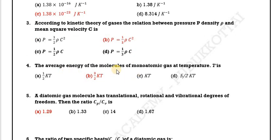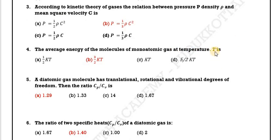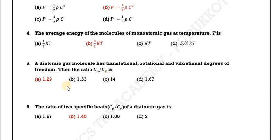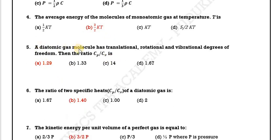Question 5: The average energy of the molecules of a monoatomic gas at temperature T. A monoatomic gas has 3 degrees of freedom. The average energy per degree of freedom is 1/2 kT, so for 3 degrees of freedom the average energy equals 3/2 kT.